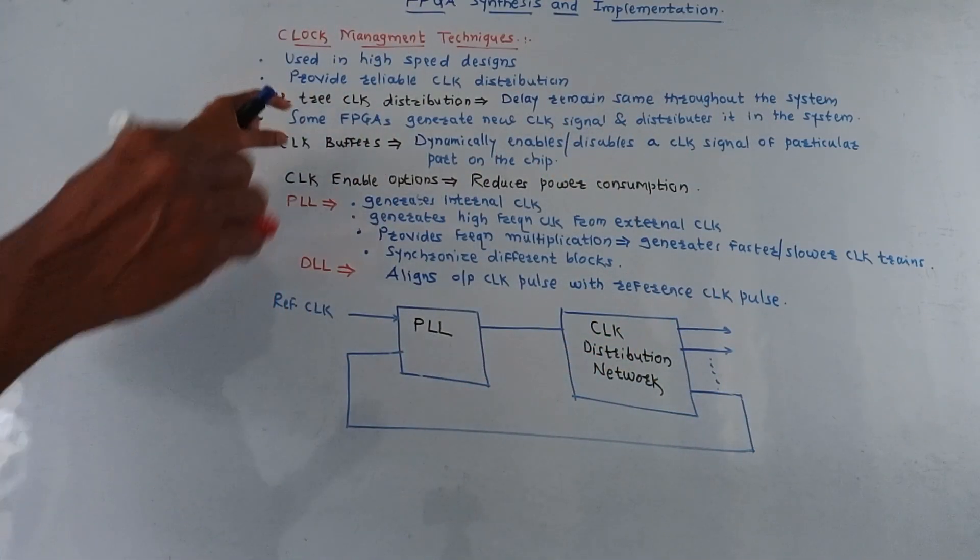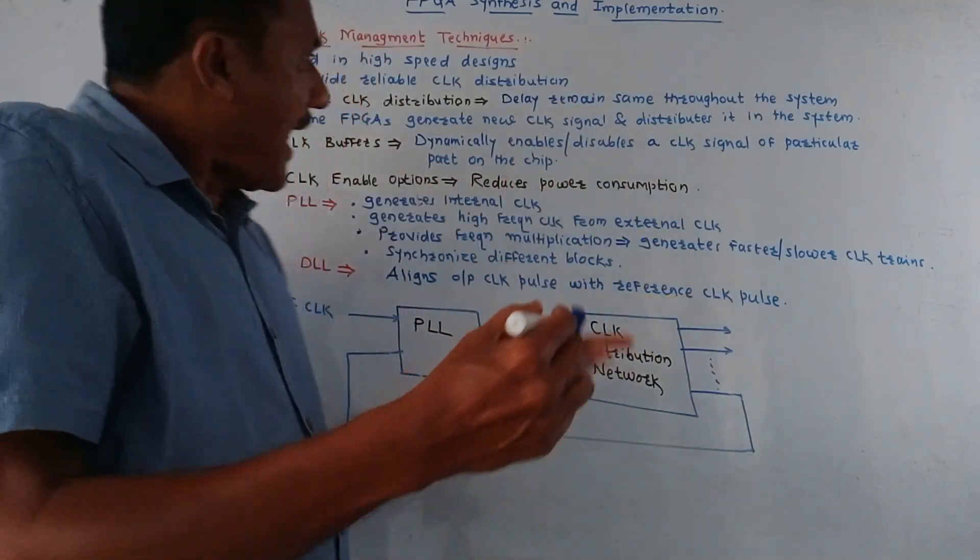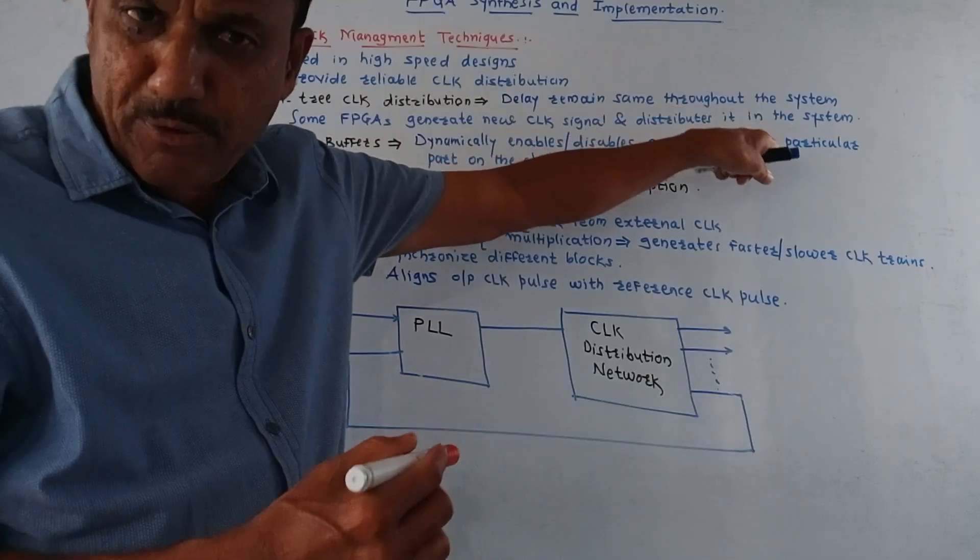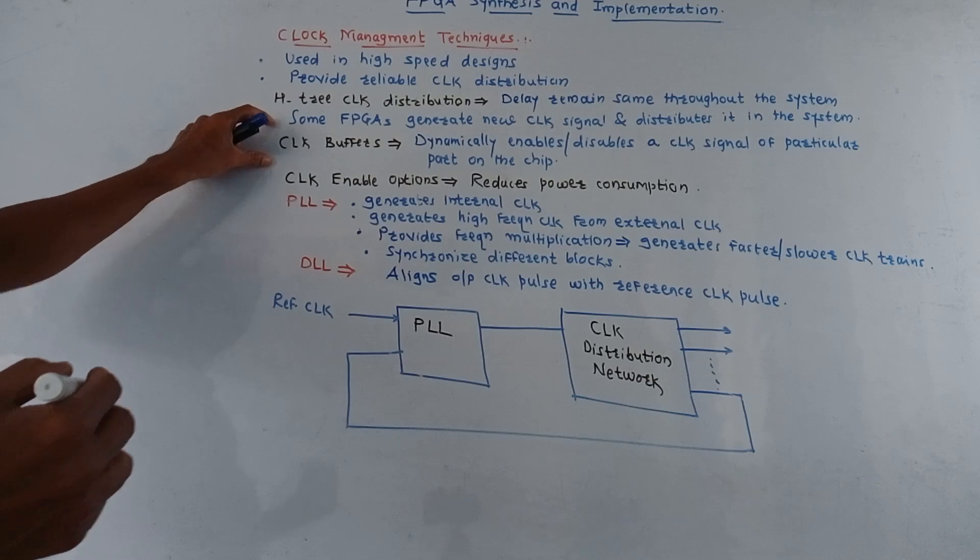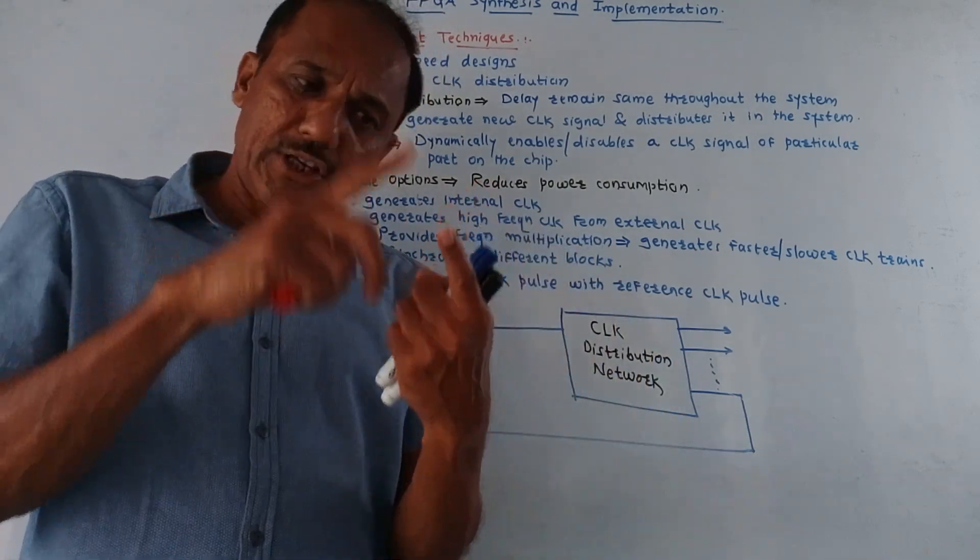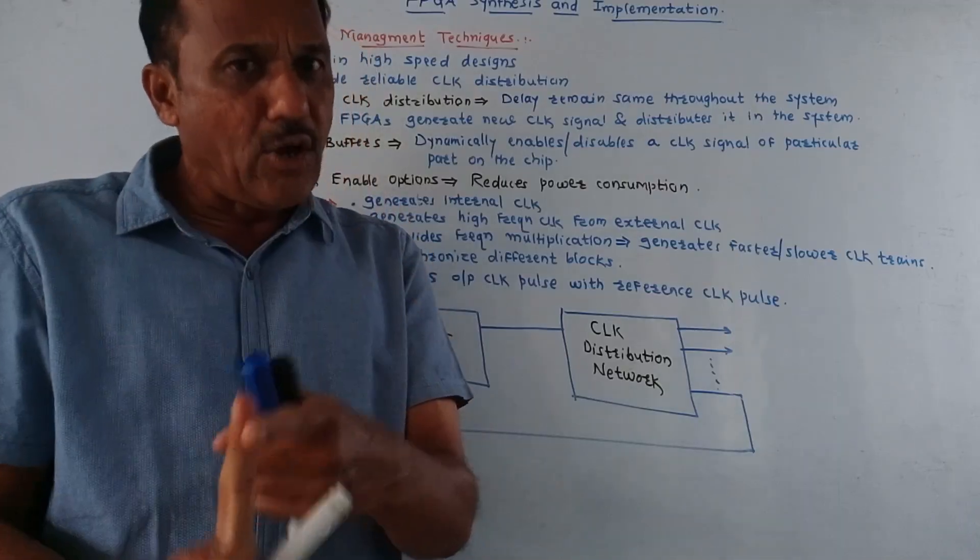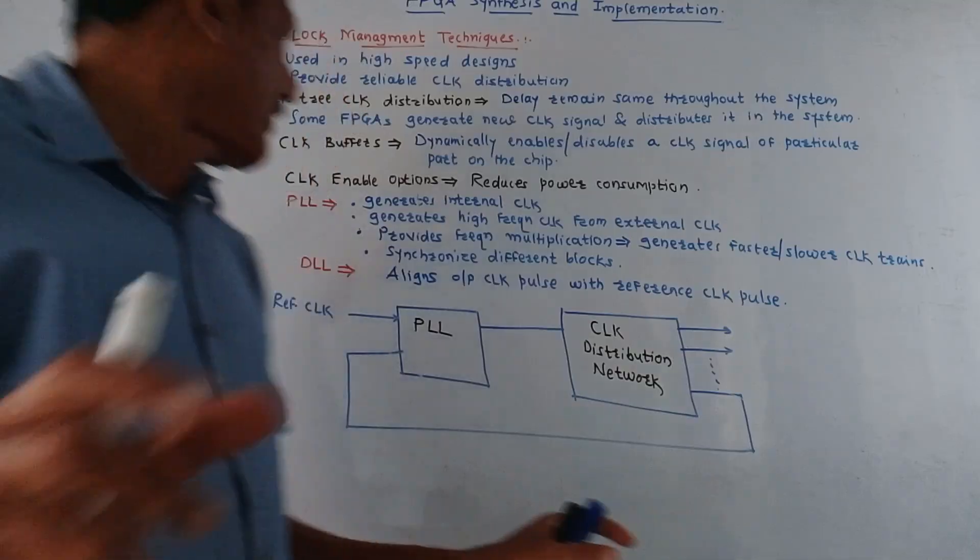Some modern FPGAs generate new clock signals if required and this clock signal is distributed in the system. Then clock buffers are used many times. These clock buffers are dynamic devices so they are used to dynamically enable or disable the clock signal applied to the particular part of the circuit.